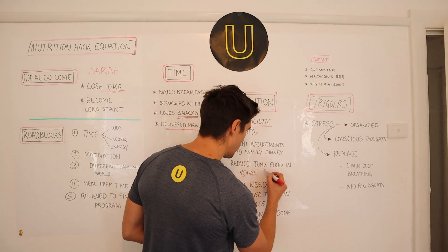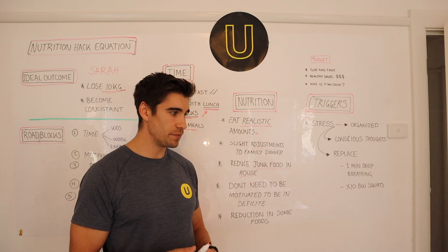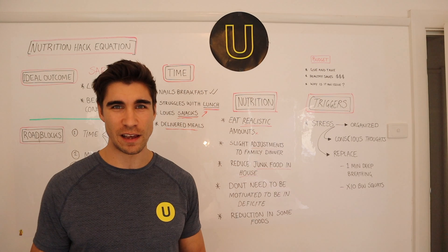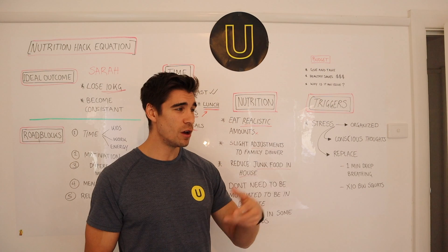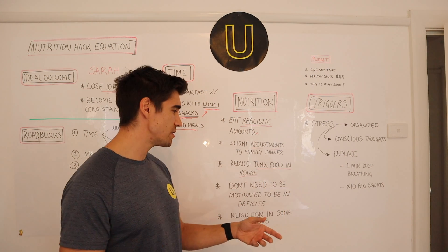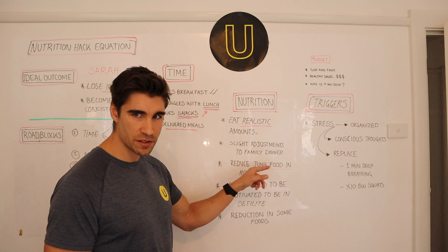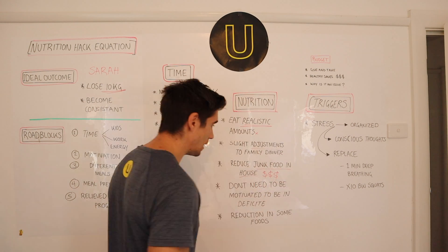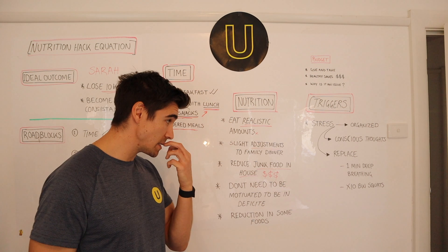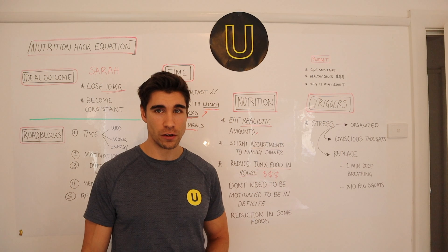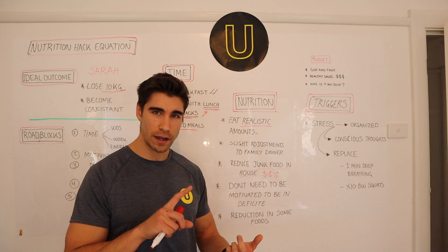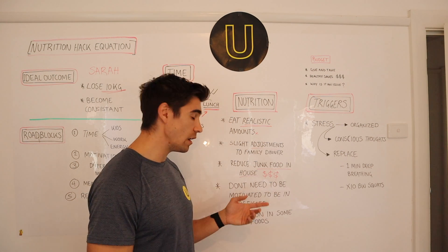Reduce junk food in the house — this is a really basic one and so easy to do. If I've got chocolate, chips, or junk food in the house, I'll eat it. There aren't many people who could have a cupboard full of junk food and not choose it over healthy alternatives. So reduce it in the house — it's going to make your family healthier, and when you don't have it to grab, you reach for the healthy alternative. You'll also save big money. We did a test with one of our nutrition shopping lists and it was about $60–$70 a week cheaper — buying healthy food, fruit and veg, meat, and whole foods is actually quite affordable.